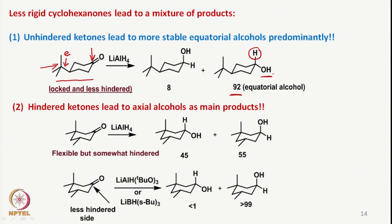If we take a hindered ketone where a methyl group is deliberately placed axially, this is not a fully locked molecule but has an axial methyl group. When this is reduced, the major product distribution is about 45:55 — slightly more equatorial alcohol. The preference of reduction occurs from the equatorial side so that we get the axial alcohol. The equatorial side is somewhat less hindered compared to the axial side, and therefore we get 55% axial alcohol via reduction from the equatorial side, whereas axial-side reduction gives 45%.